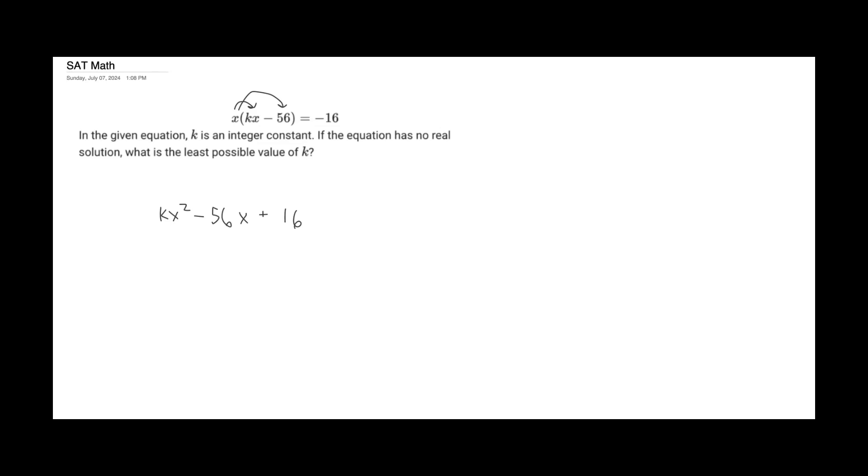All right, there we go. So what we're trying to find is the least possible value of k, so the coefficient in front of our x squared term, and the equation has no real solution.